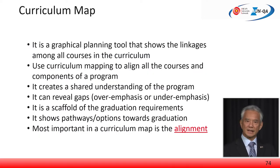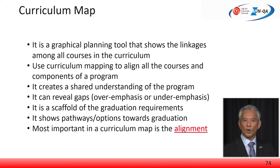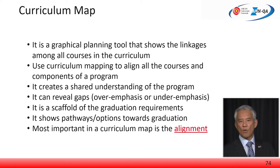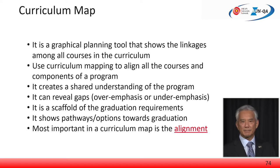A curriculum map is a graphical representation of, and a planning tool that shows, the linkages among all the courses in a curriculum. Its use is similar to that of a courses to ELO map. It informs students of what courses need to be taken at every stage of the program. It can reveal over- or under-emphasis, if there are any, among the various types of courses.